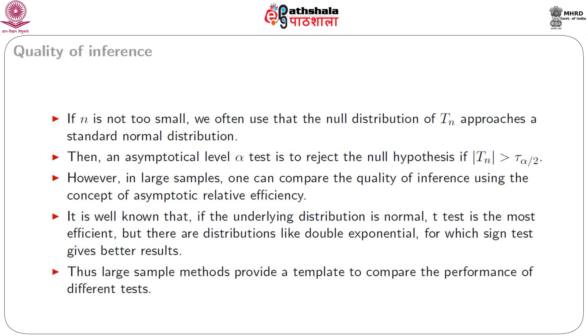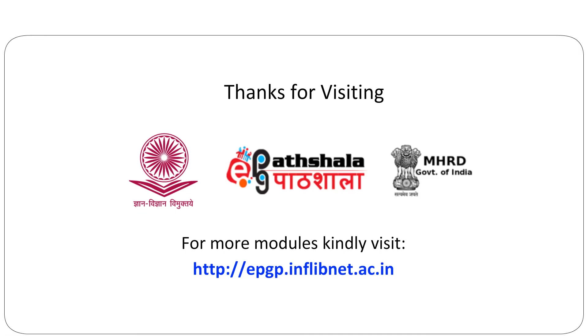In large samples, one can compare the quality of inference using the concept of asymptotic relative efficiency. It is well known that if the underlying distribution is normal, the t-test is the most efficient, but there are distributions like the double exponential for which the sign test gives better results. Thus, large sample methods provide a template to compare the performance of different tests. We have seen the scope of application of large sample theory in statistics. As is evident from the examples, large sample theory, probability theory, and real analysis are good companions of each other. Our next module will be on the mathematical preliminaries for a better overview of large sample methods.